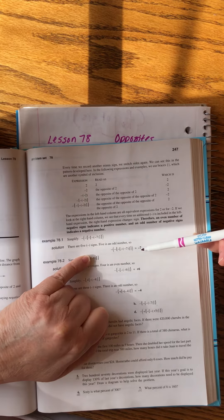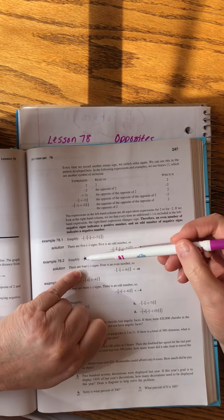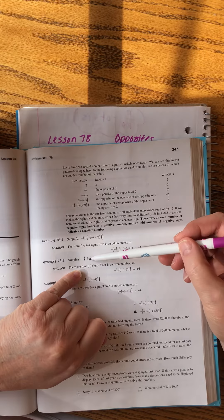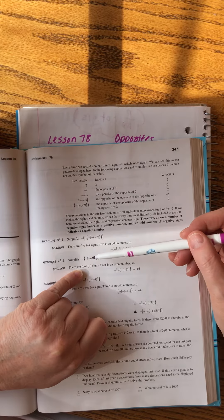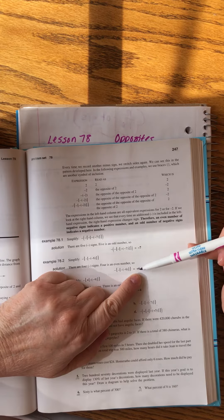Okay, what about this next one? One, two, three, four. Aha, there are four. That's an even number. That means they all pair off to make positives, so our final answer is positive six.